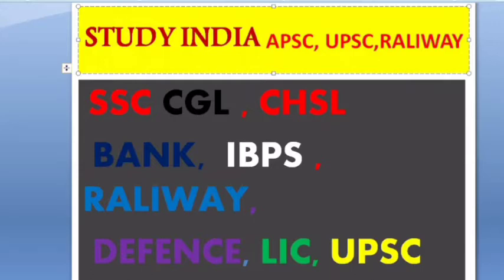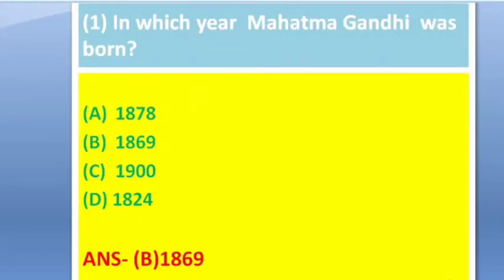First question: In which year was Mahatma Gandhi born? Options: 1878, 1869, 19th century, and 1824. The answer is option B — 1869.